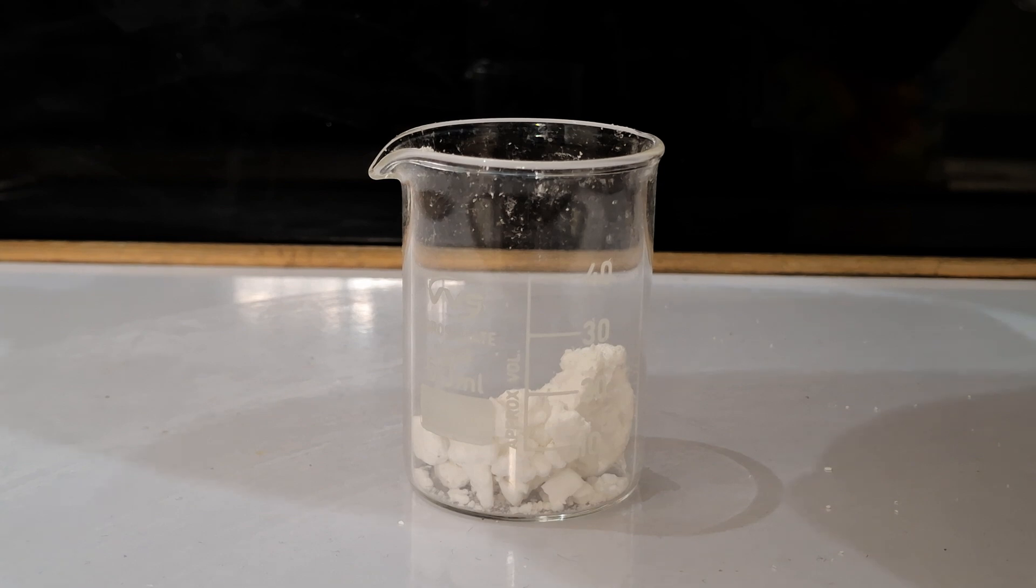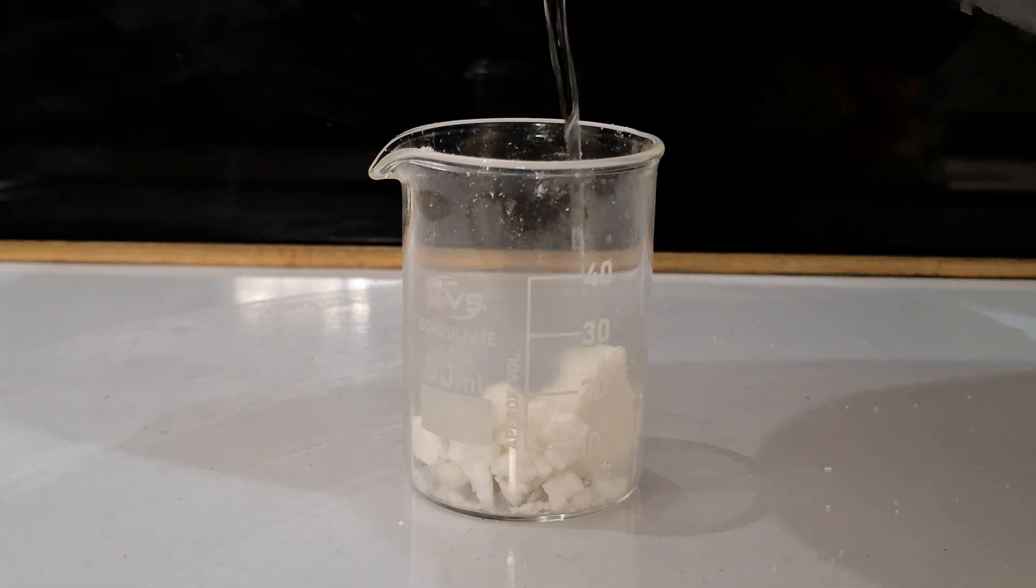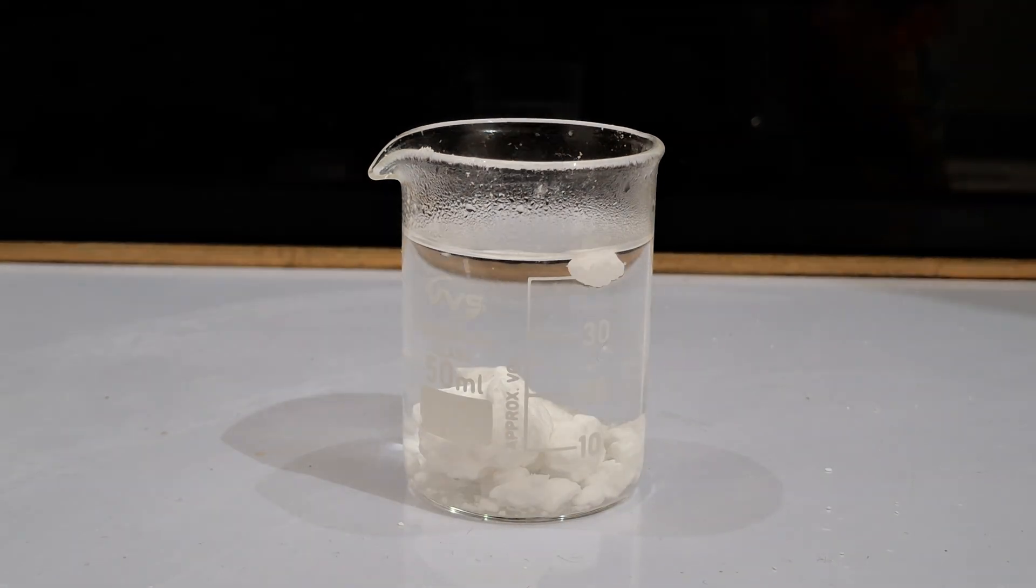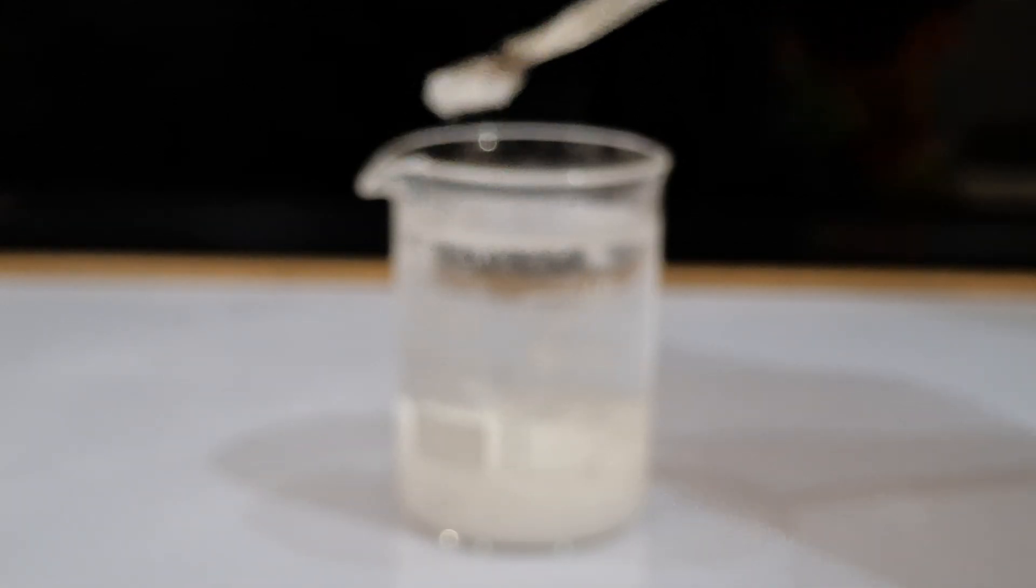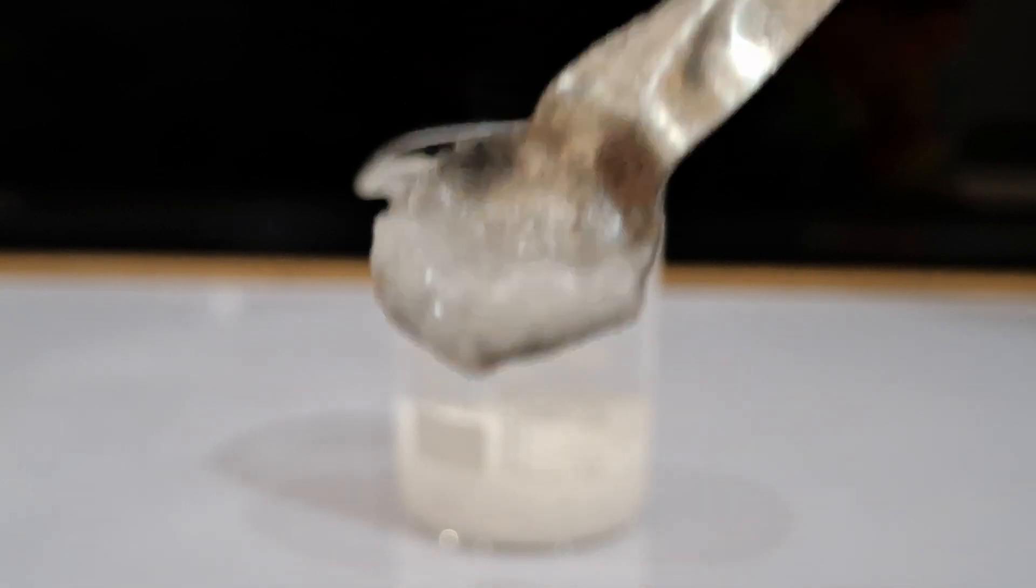Then I move on to recrystallization, where I start by adding hot water to the benzoic acid. After stirring and letting it cool for a while, you can start to see crystals form on the surface of the water.